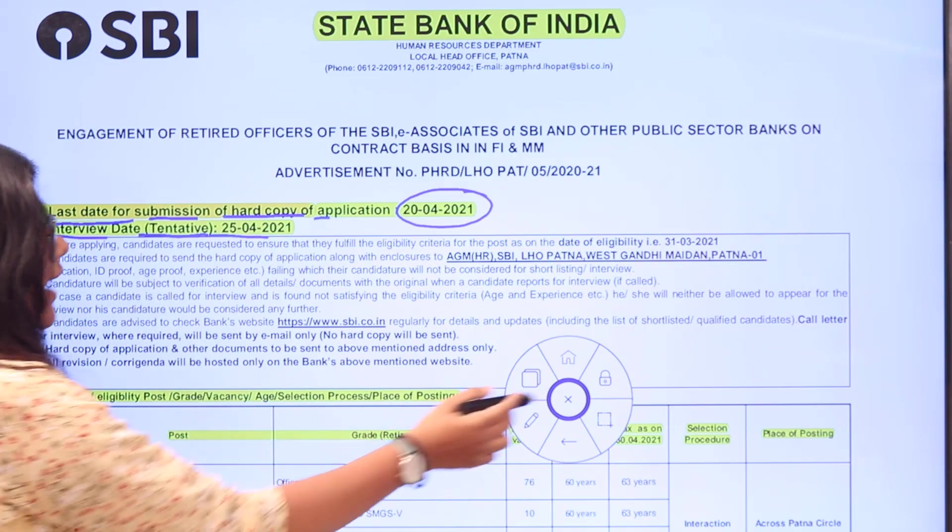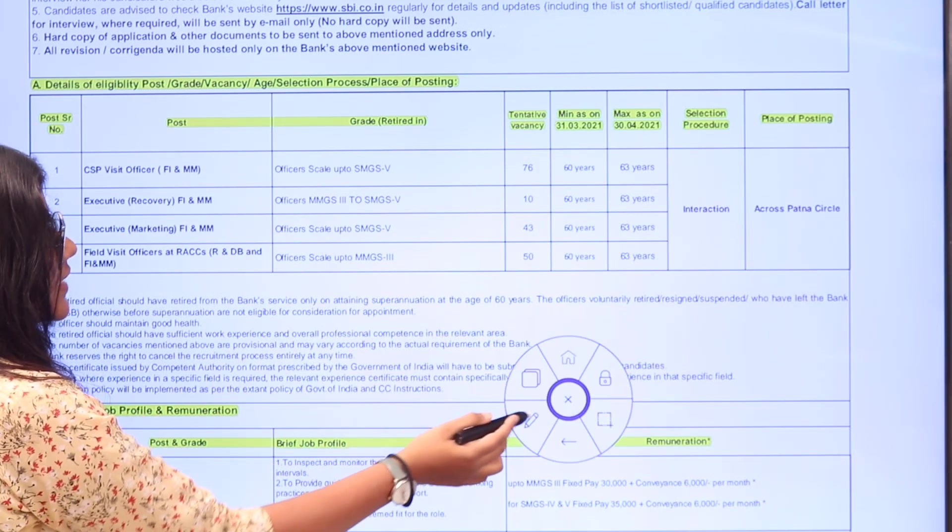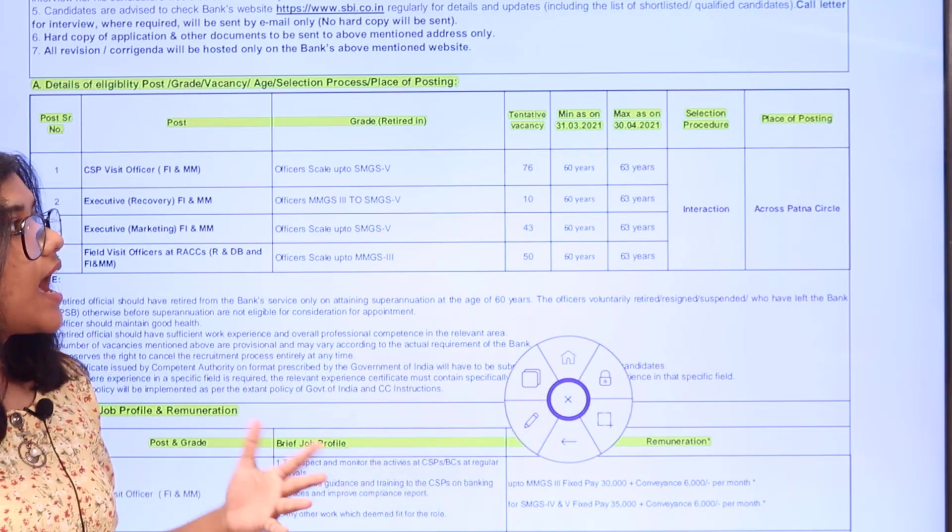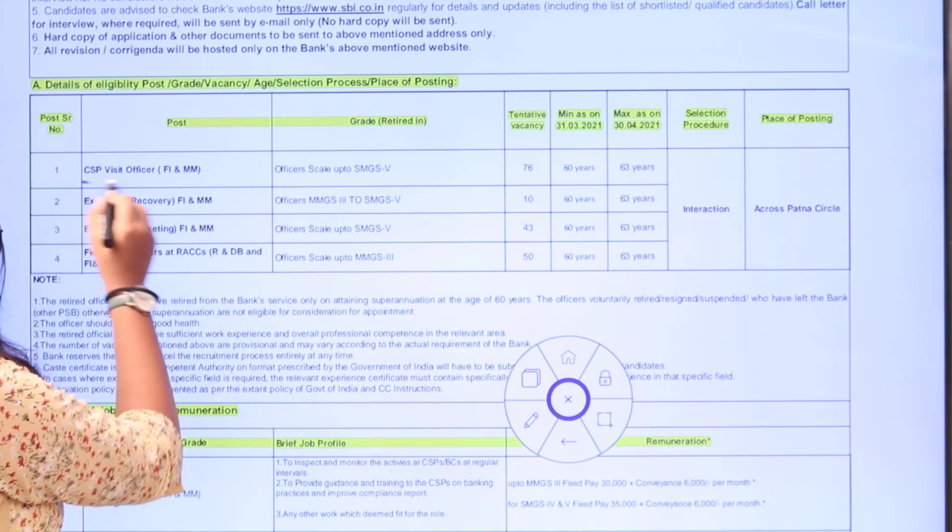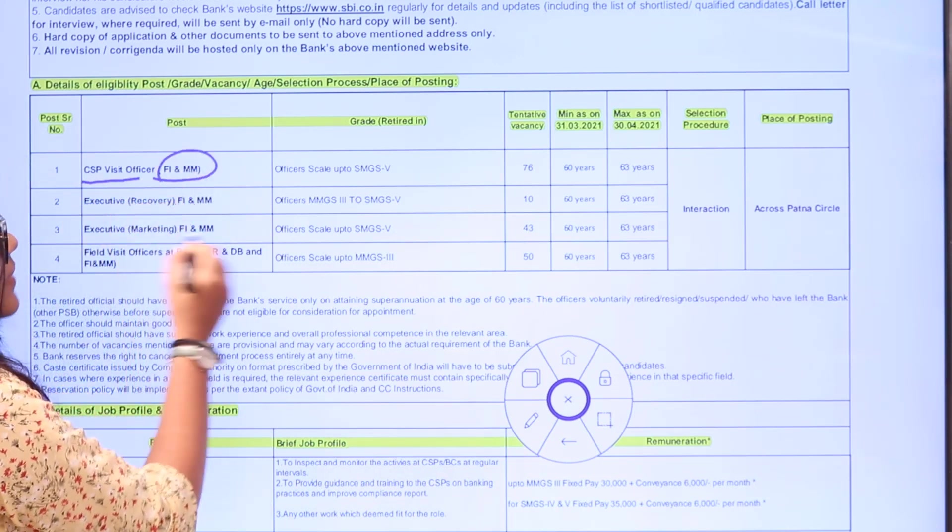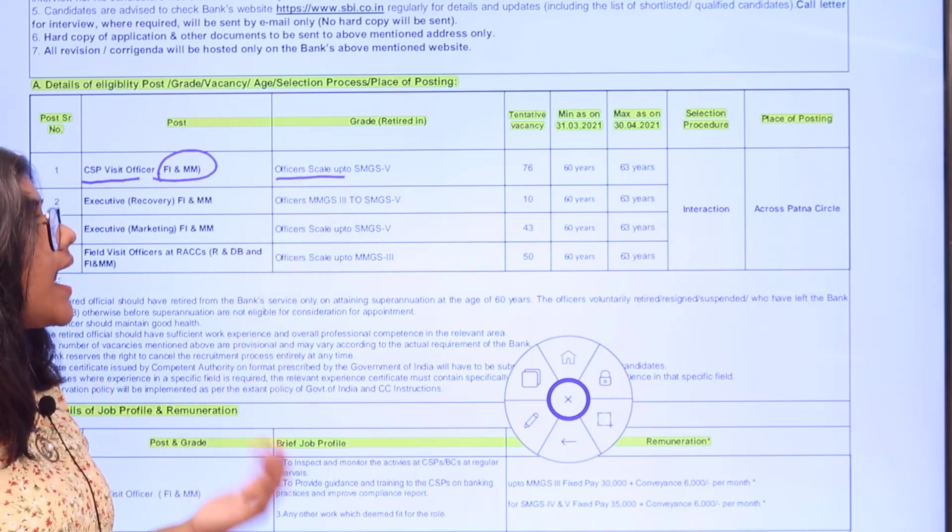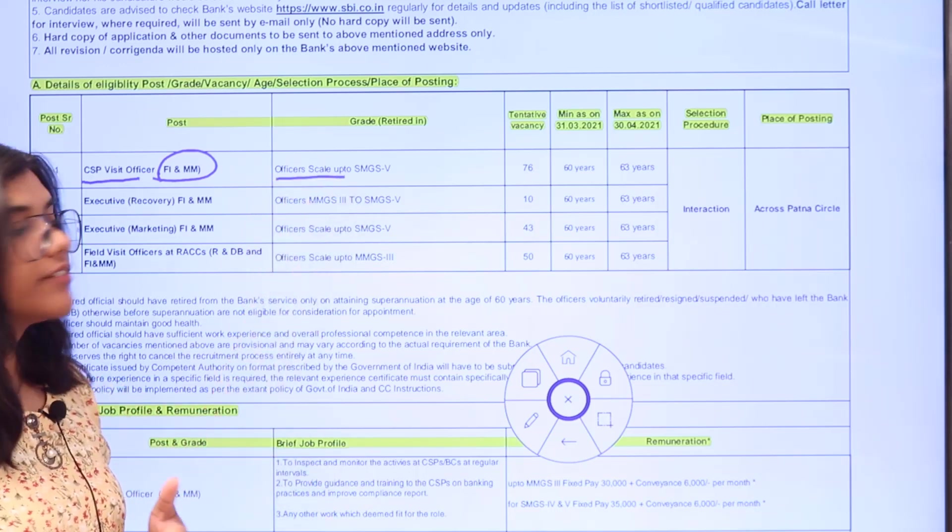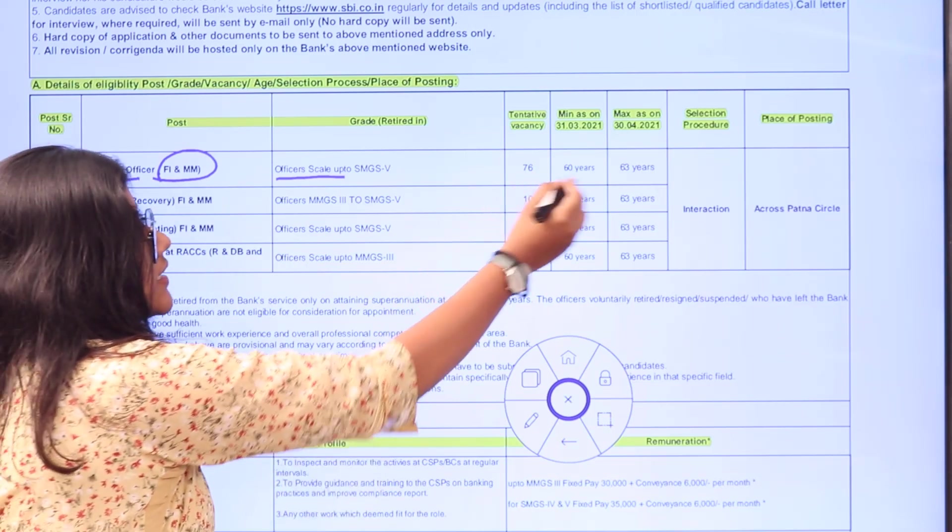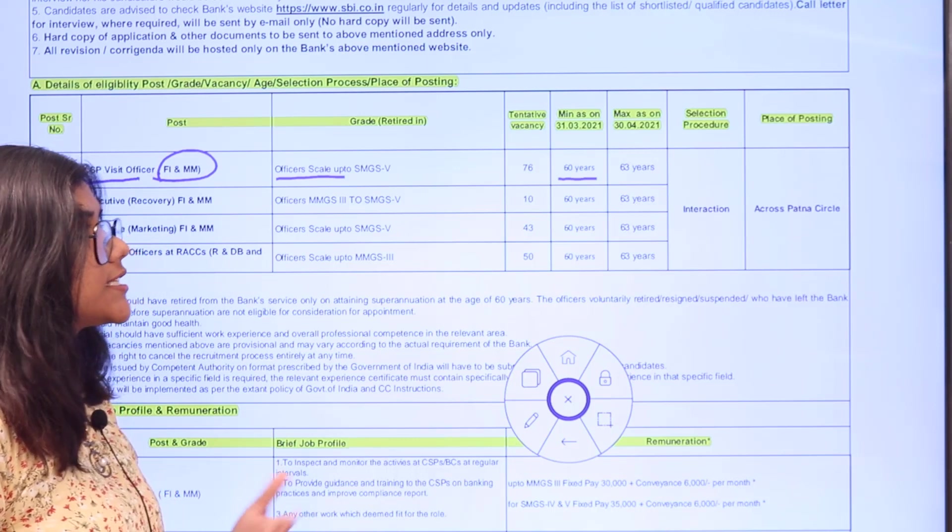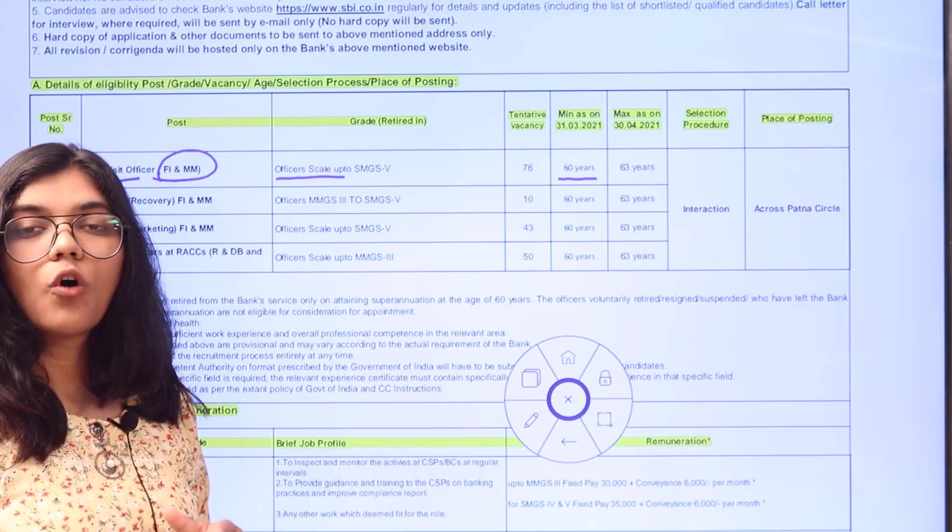Now we'll see the post, grade, sector, and vacancies. For CSP Visit Officer FI and MM, the grade is retired officers scale up to SMGS, with 76 tentative vacancies. The age requirement is 60 to 63 years. The selection process is through an interaction for all posts.